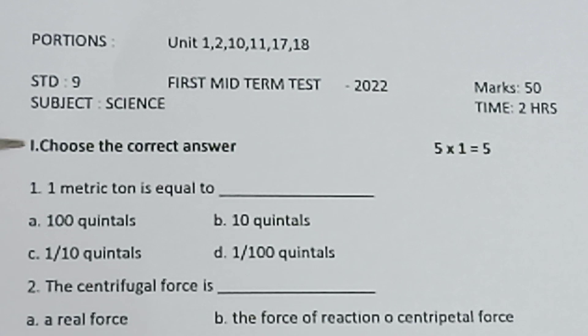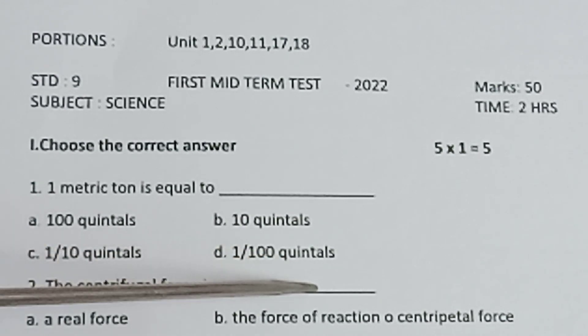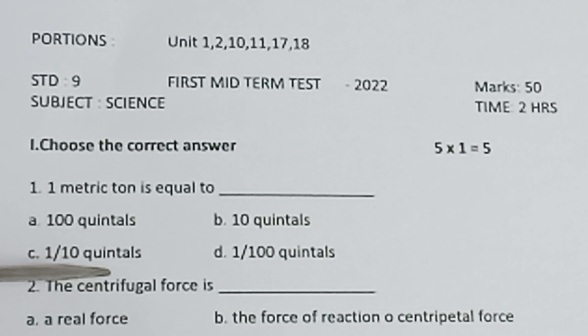Marks 50. Part 1: Choose the correct answer. 5 x 1 = 5. Question 1: 1 metric ton is equal to: A) 100 quintals, B) 10 quintals, C) 1/10 quintals, D) 1/100 quintals.